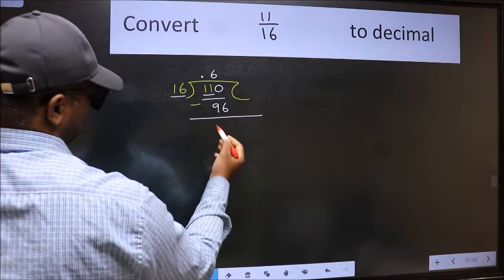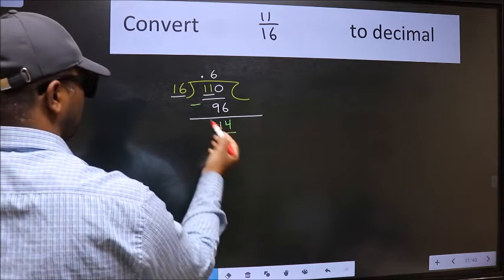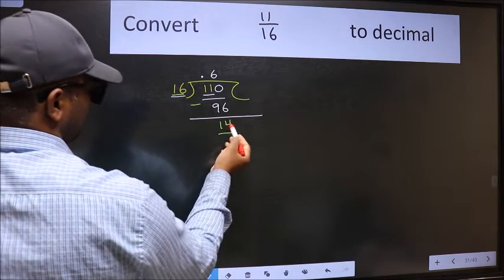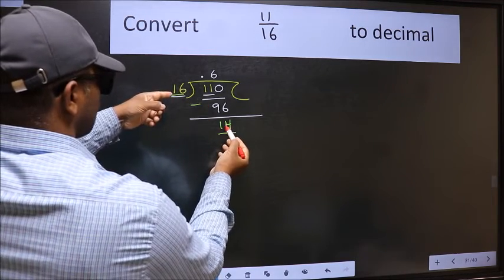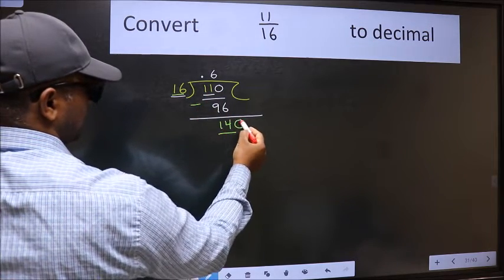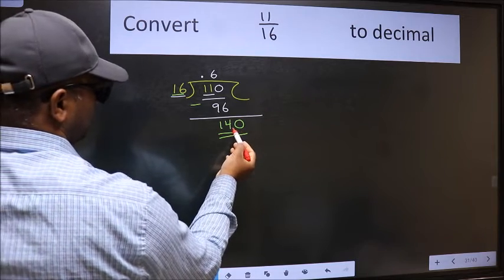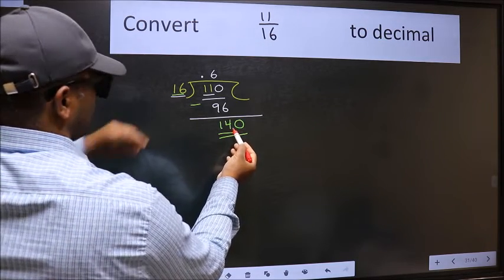Now here we have 14 and here 16. 14 is smaller than 16 and we already have the decimal, so we can directly take 0, making 140. A number close to 140 in the 16 table is 16×8=128. Now we subtract and get 12.